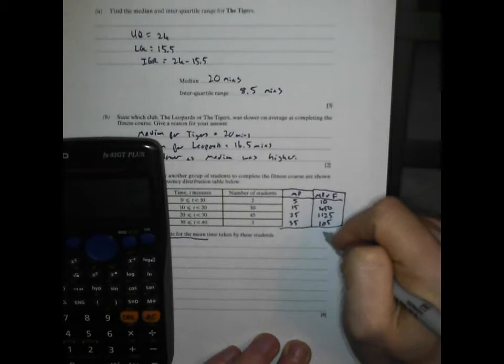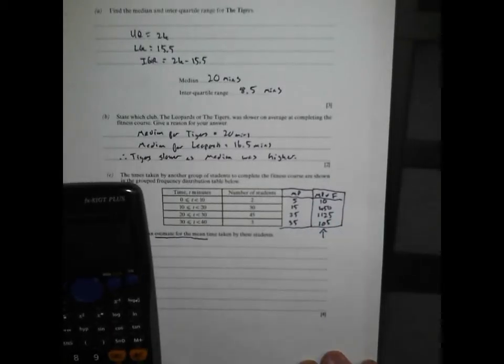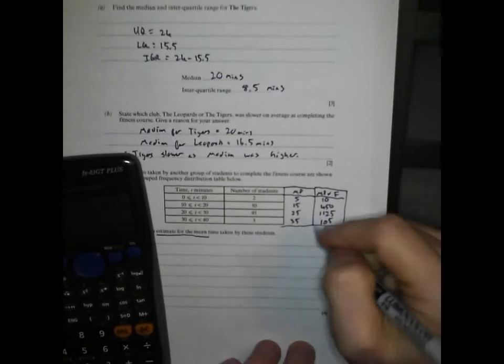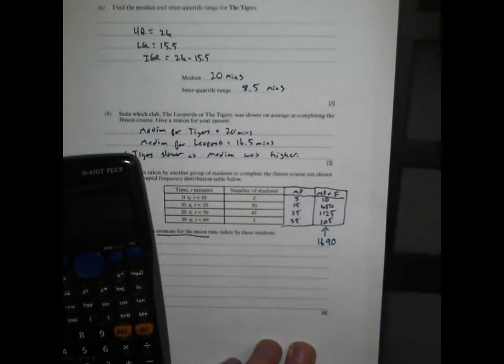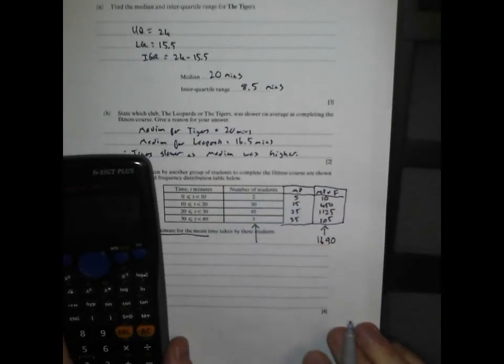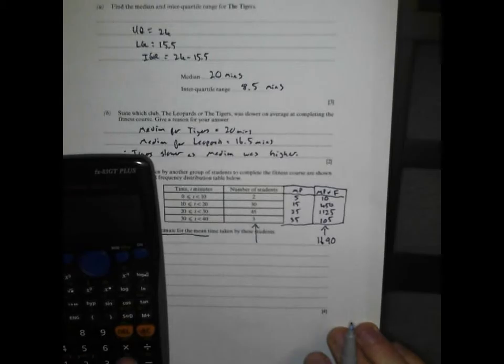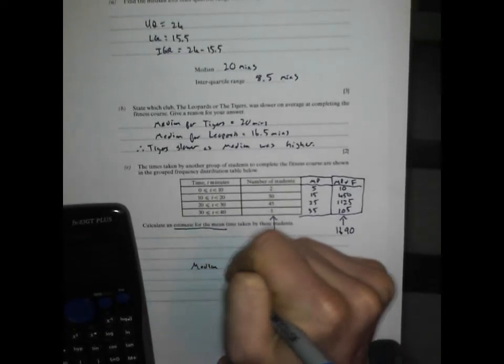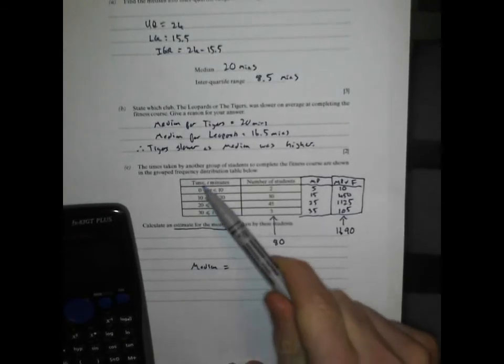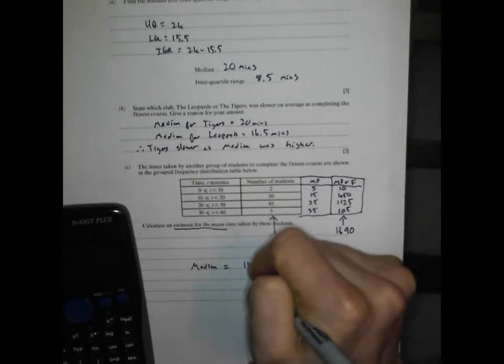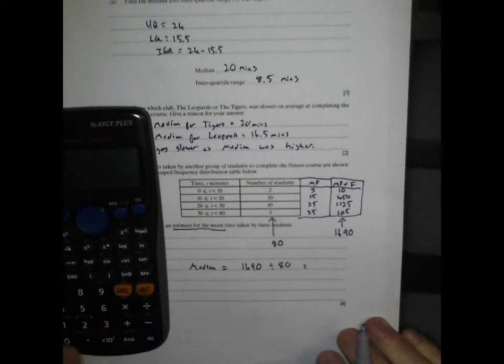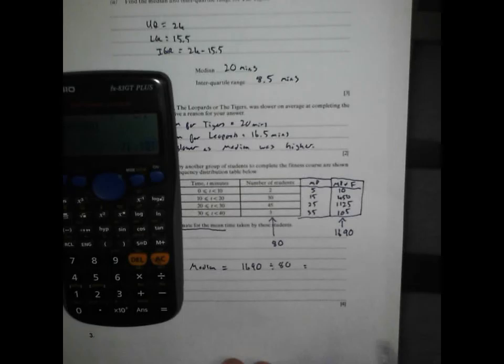I've got to remember which columns to total up. My total midpoint times frequency gives my best estimate of minutes taken: 10 plus 450 plus 1,125 plus 105 equals 1,690. What do I divide that by? My total number of students: 2 plus 30 plus 45 plus 3 equals 80. I need it to be somewhere between 0 and 40, roughly in the middle. 1,690 divided by 80 equals 21.125 mins, which seems a fairly sensible answer.